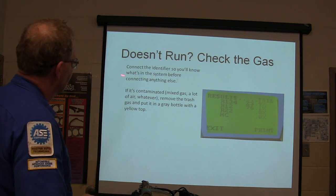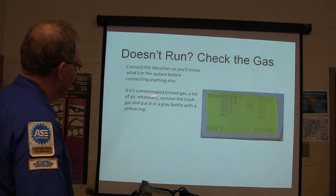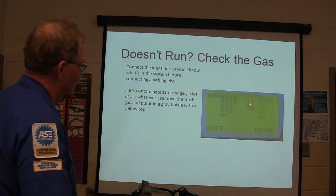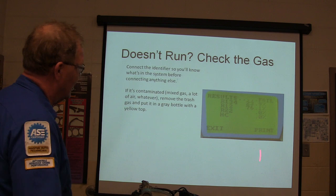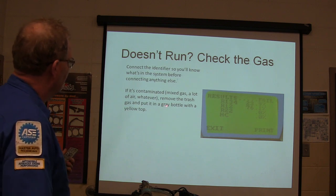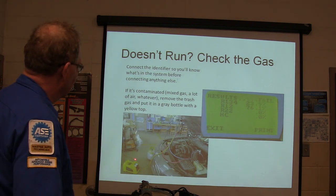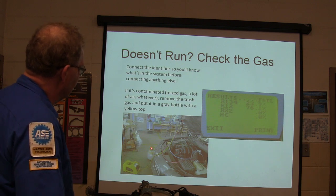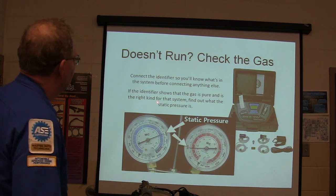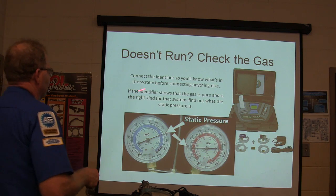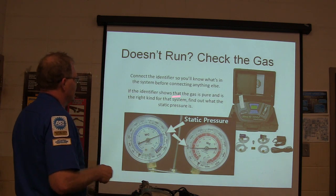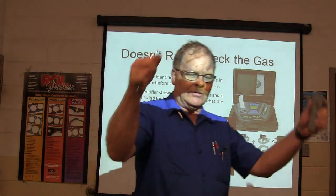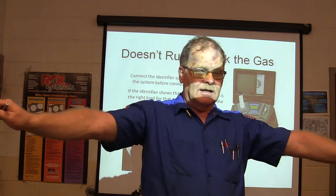Connect the identifier so you'll know what's in the system before you do anything else. If it's contaminated — like one we checked that showed 76% R12 and 22% of something else — remove the trash gas and put it in a gray bottle with a yellow top. We've got a dedicated machine just for that. Connect the identifier, confirm what's in the system, then get a static pressure reading — that's what you see when you hook up the gauges before doing anything else.